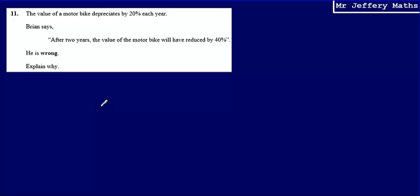This is question 11. We're told that the value of a motorbike depreciates by 20% each year. Brian says after two years the value of the motorbike will have reduced by 40%. We're told that he is wrong and we're asked to explain why.